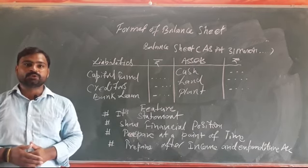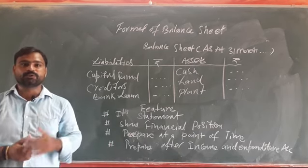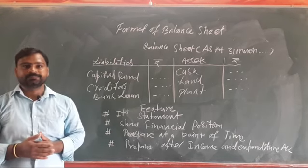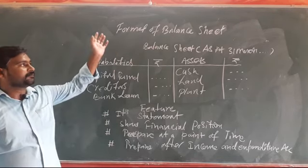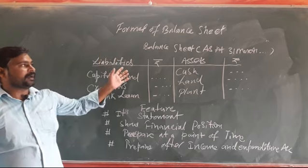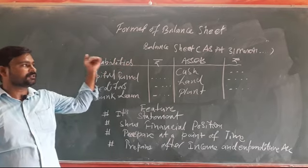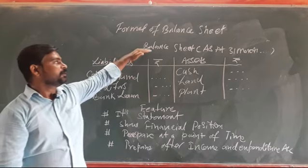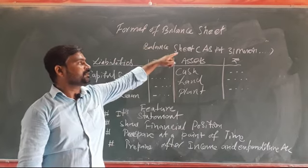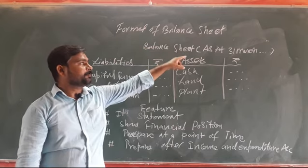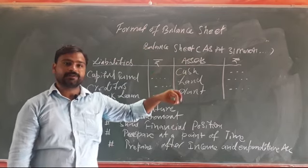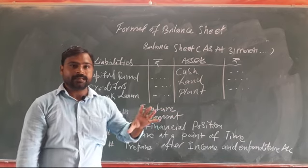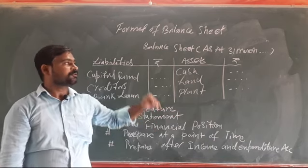A balance sheet is prepared at a point of time and shows the financial position of an organization. Here I have given the format of the balance sheet. In the format, you will write 'Balance Sheet' first, and then in brackets 'as at 31st March' or '31st December' — whichever date it is prepared on.